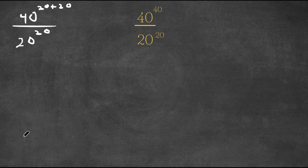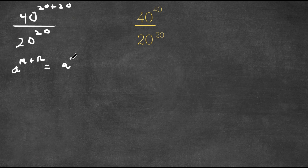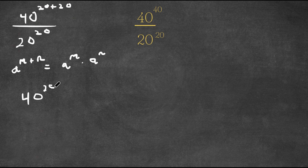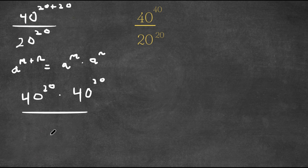If we have something in the form a to the power of m plus n, this is equal to a to the power of m times a to the power of n. So this means that 40 to the power of 20 plus 20 is equal to 40 to the power of 20 times 40 to the power of 20. And we are still dividing this by 20 to the power of 20.